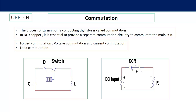In forced commutation you have voltage commutation and current commutation. In voltage commutation we will take help of an inductor and capacitor to develop reverse voltage across the thyristor to turn it off. In current commutation we apply a reverse current to the thyristor; when the reverse current becomes equal to the forward current, the net current through the thyristor becomes zero, falls below the holding current, and the thyristor turns off automatically.